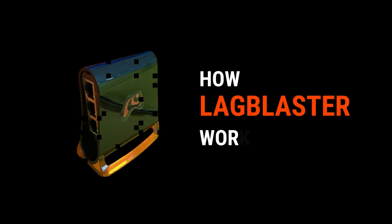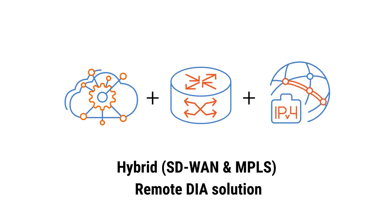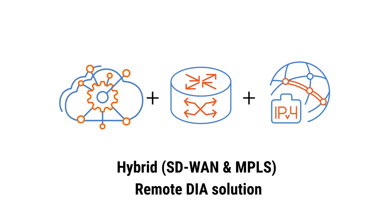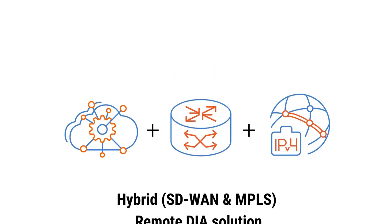Lag Blaster is a hybrid SD-WAN MPLS remote DIA solution. Lag Blaster users connect to the desired IPTP network access server via SD-WAN technology and then establish a connection to the designated network access translation gateway via MPLS transport.